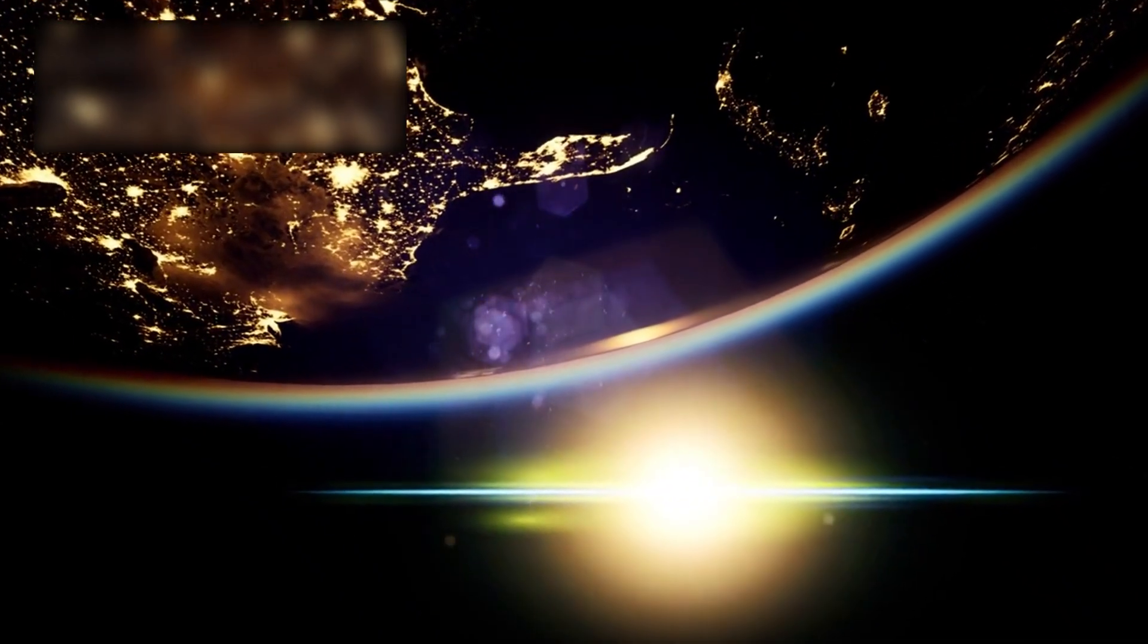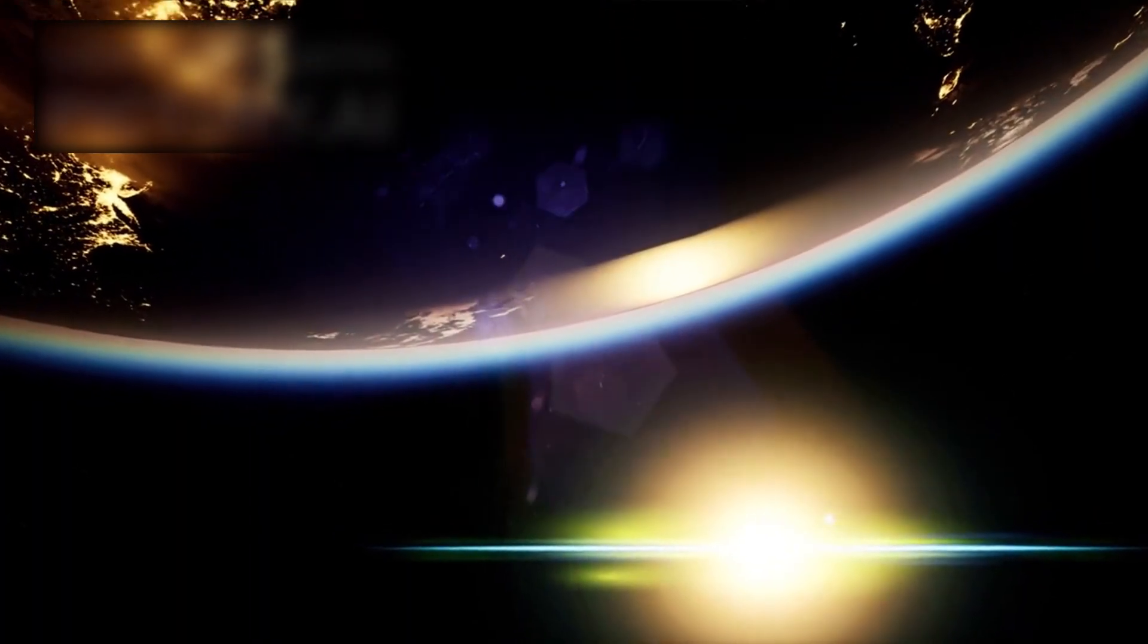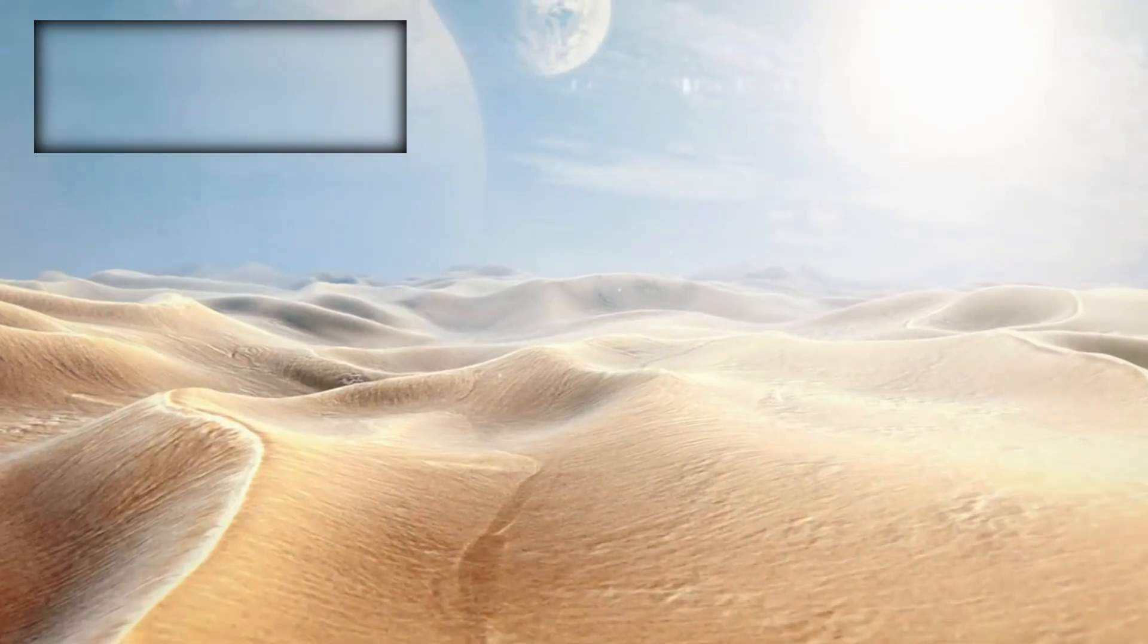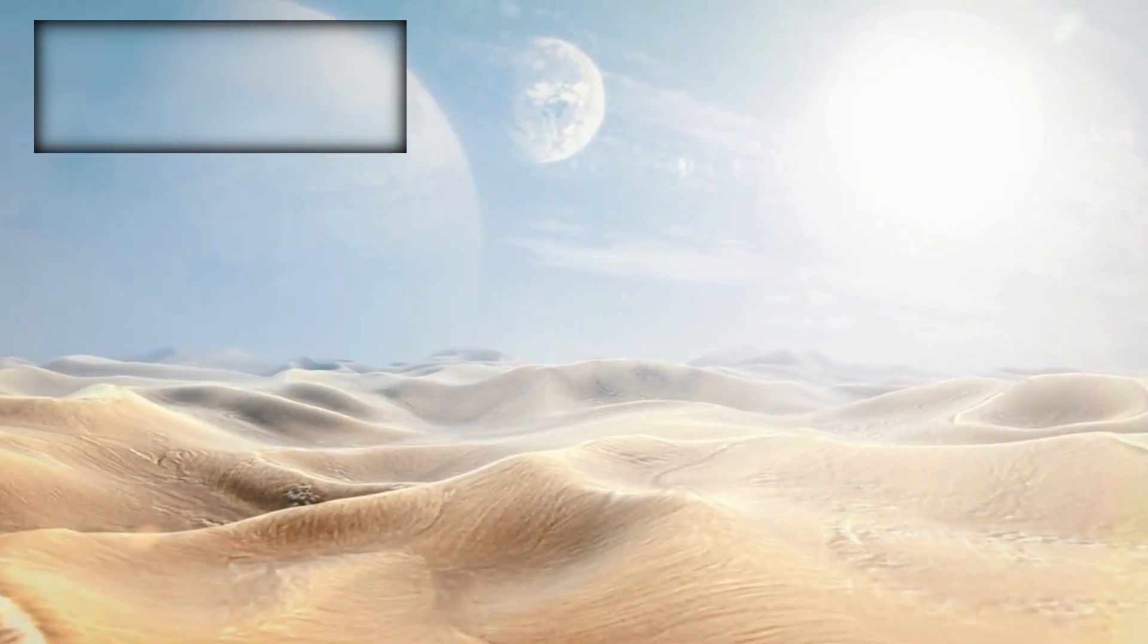The planet completes an orbit in just 11.7 Earth days and is locked in such a way that one side faces its star in perpetual daylight while the other remains shrouded in endless night. This unusual configuration could create extreme temperature contrasts across its surface.